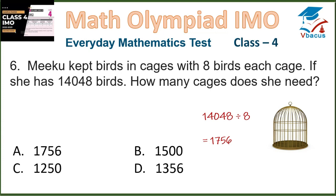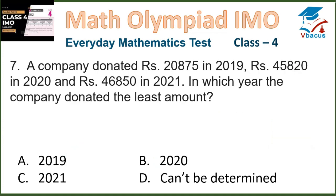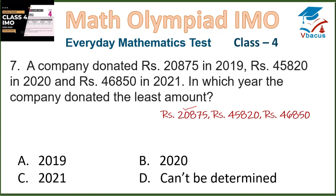Question 7. A company donated Rs. 20,875 in 2019, Rs. 45,820 in 2020, and Rs. 46,850 in 2021. In which year did the company donate the least amount? Comparing the three amounts, Rs. 20,875 is the lowest, and that was donated in 2019, which is option A.